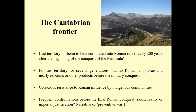Moving to Northern Iberia in the so-called Cantabrian fringe, we see communities living in direct contact with territories conquered by Rome for several generations, yet with no Roman amphorae, nearly no coins or other products before the military conquest. The Cantabrian area was the last part of Iberia to be incorporated into Roman rule, and this conquest took place nearly 200 years after the Romans started conquering the Iberian Peninsula from the Mediterranean coast inward. I will claim that these communities were consciously resisting Roman influence for several decades before the actual war started, before they were forcibly incorporated into the empire.